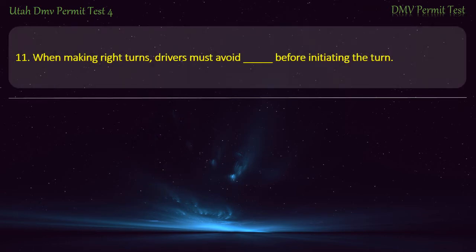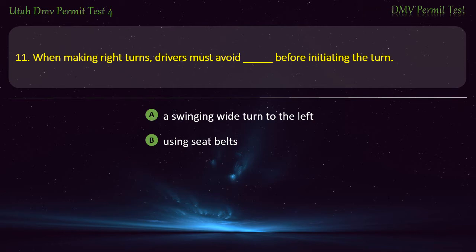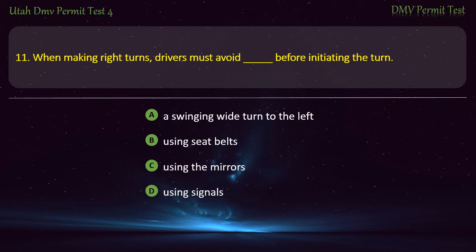Question 11. When making right turns, drivers must avoid, before initiating the turn: A swinging wide turn to the left; Using seat belts; Using the mirrors; or Using signals? Answer: A swinging wide turn to the left.